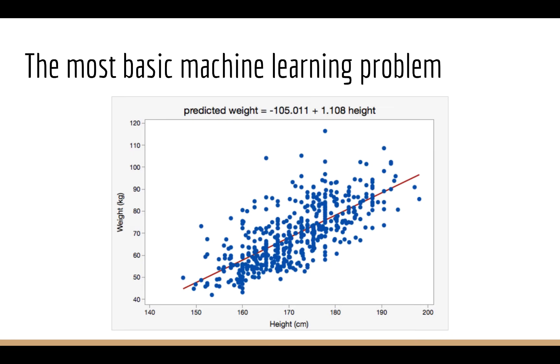The most basic machine learning problem looks something like this. We have some input on the x-axis and we would like to be able to predict the target which is on the y-axis. As an example, we would be trying to predict someone's weight from their height. We know that generally speaking taller people are heavier because they have more mass.